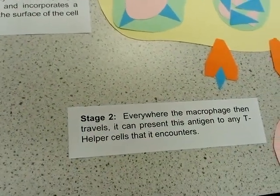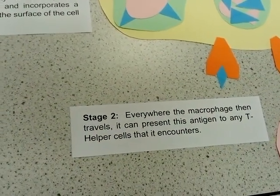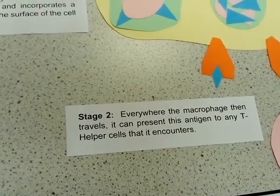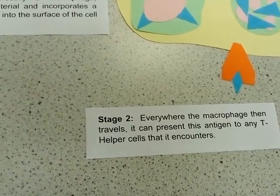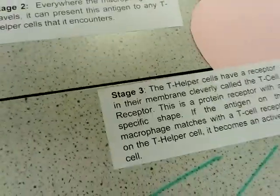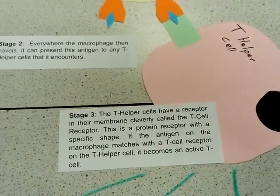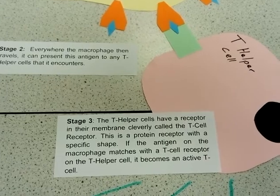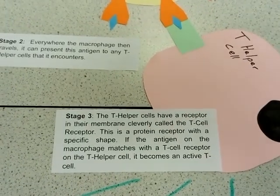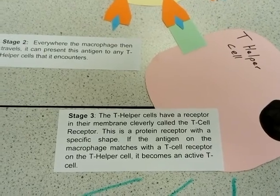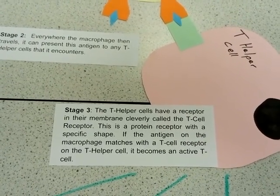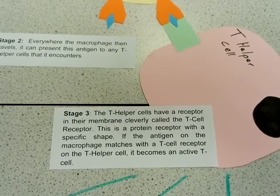Everywhere the macrophage then travels, it can present this antigen to T-cells and T-helper cells. The T-helper cells have a receptor in their membrane that is specific to the shape of antigen being presented by the macrophage.